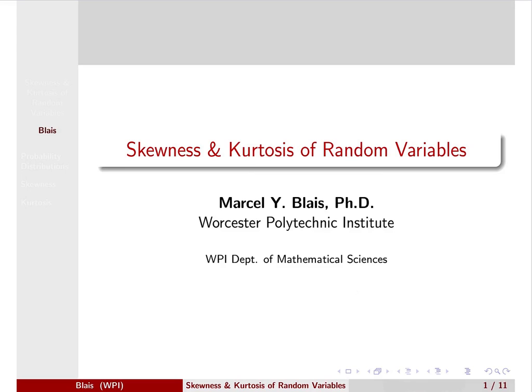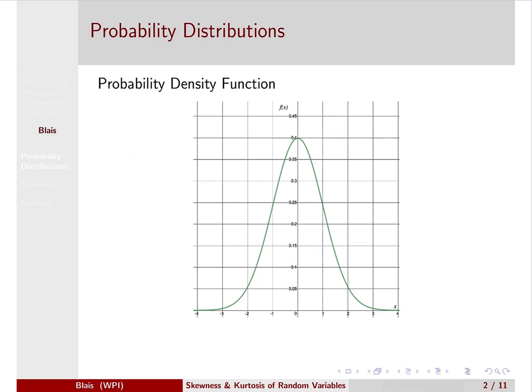In this lecture, we'll be looking at skewness and kurtosis of random variables. First, let's look at an illustration of a probability density function — this is the standard normal density.